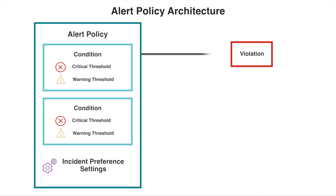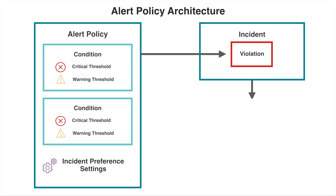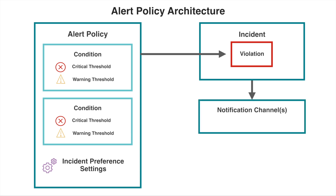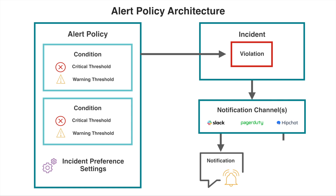Where notifications are sent is determined by the policy's notification channel. New Relic Alerts supports many different notification channel types, including Slack, PagerDuty, HipChat, Email, and more. You can even associate more than one channel with a policy to receive notifications in multiple different locations. I'll explore notification channels more closely in a later tutorial.